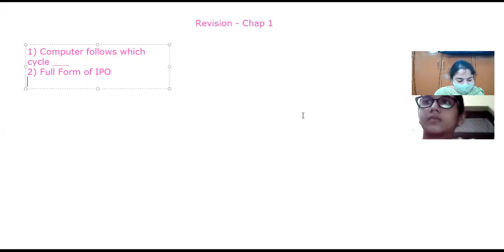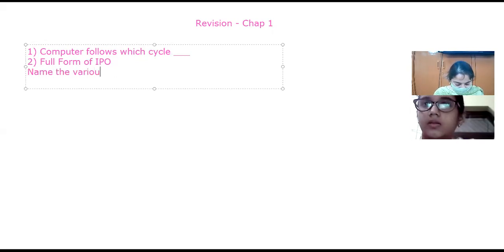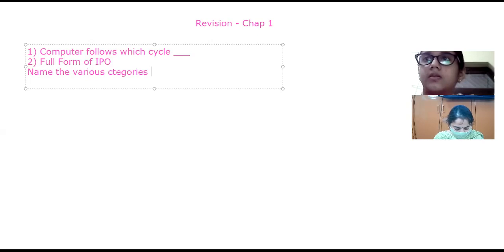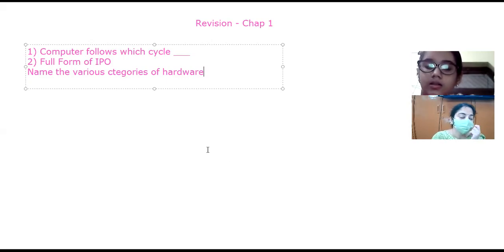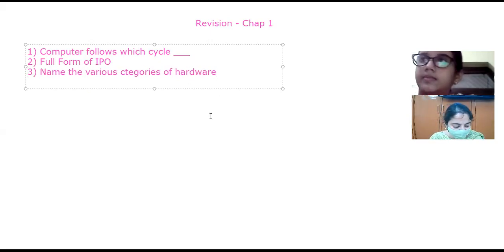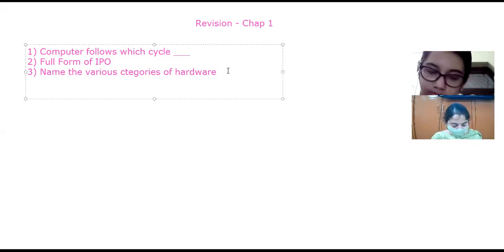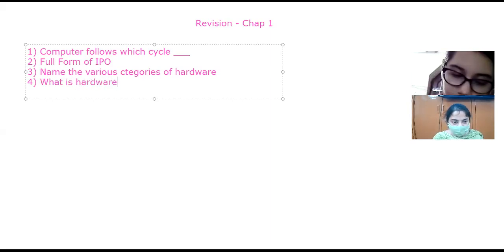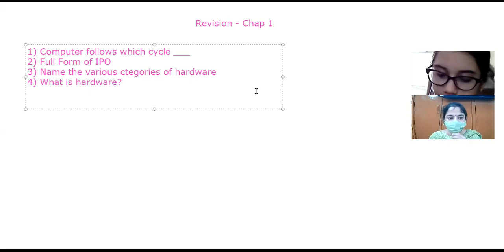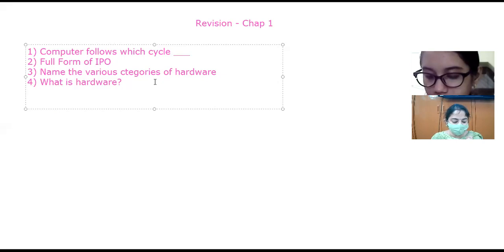Name the various categories of hardware. The categories are: input devices, output devices, processing devices, and storage devices. What is hardware? The parts of a computer that we can touch are called hardware. The various categories of hardware components are input devices, output devices, processing devices, and storage devices.